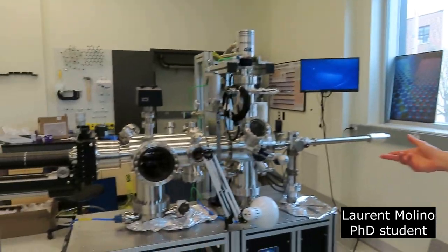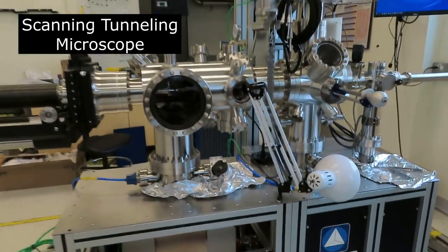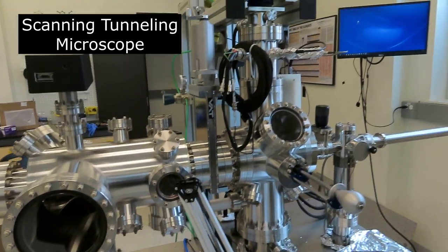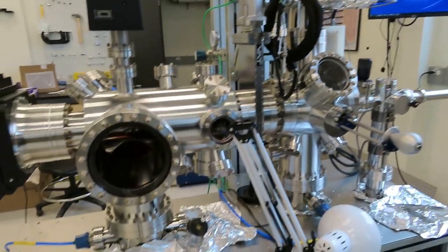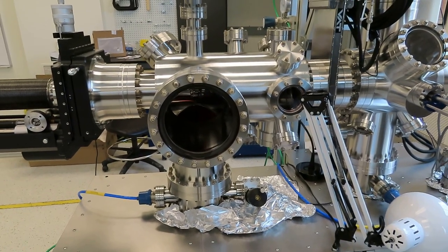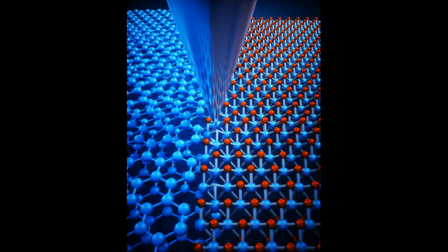Hi, I'm Laurent. I'm a PhD student at the University of Ottawa, and this is our scanning tunneling microscope. This is in the group of Professor Adina Lukin-Mayer. The principle of a scanning tunneling microscope is you have an atomically sharp tip, so the tip at the very point is just a few atoms, very sharp.